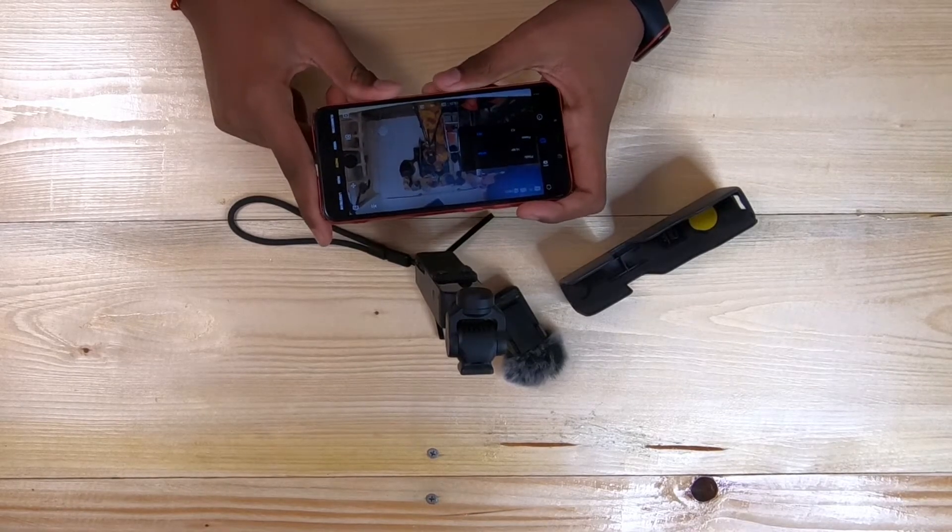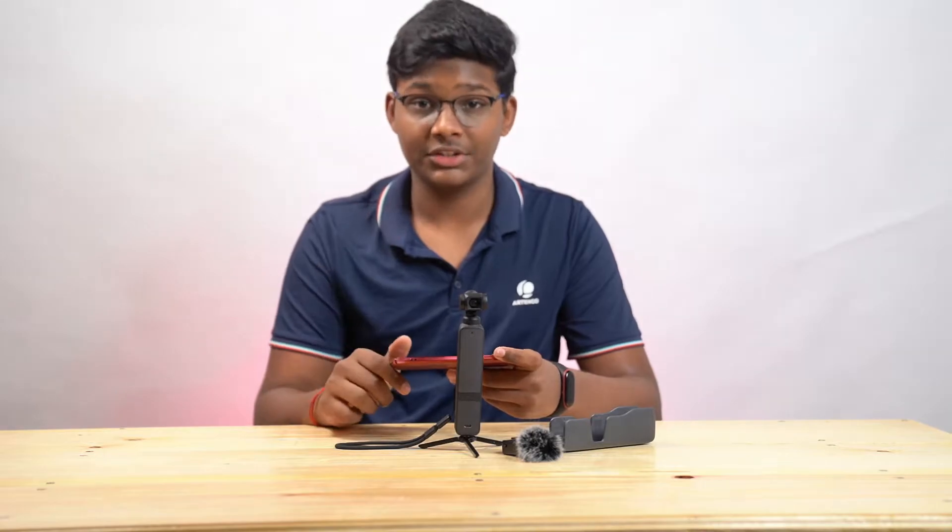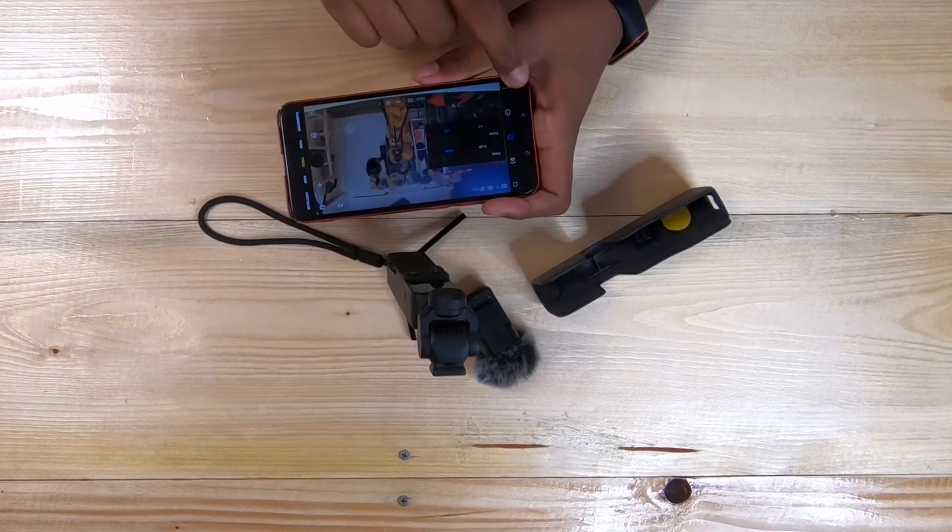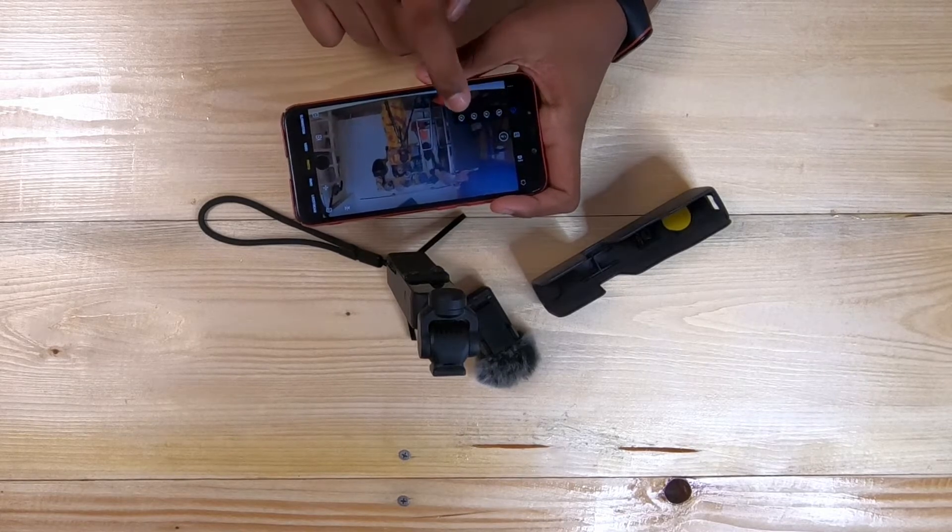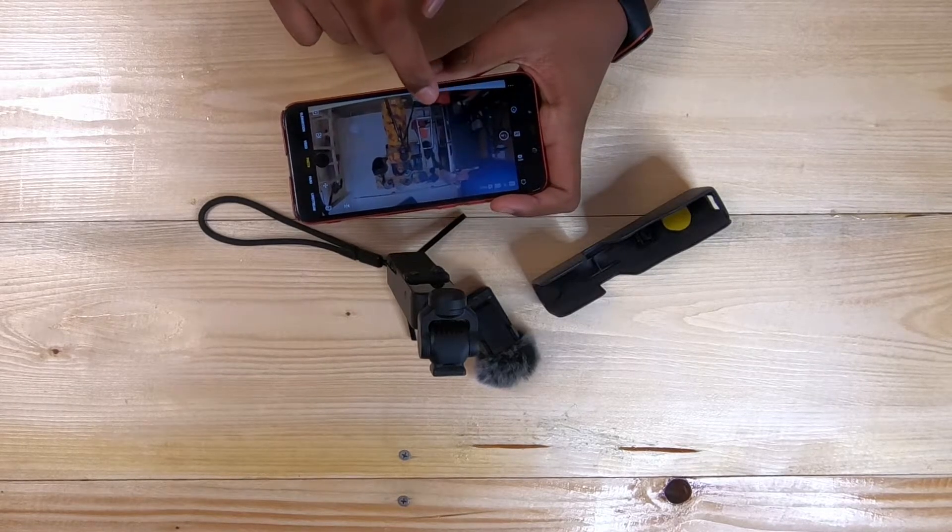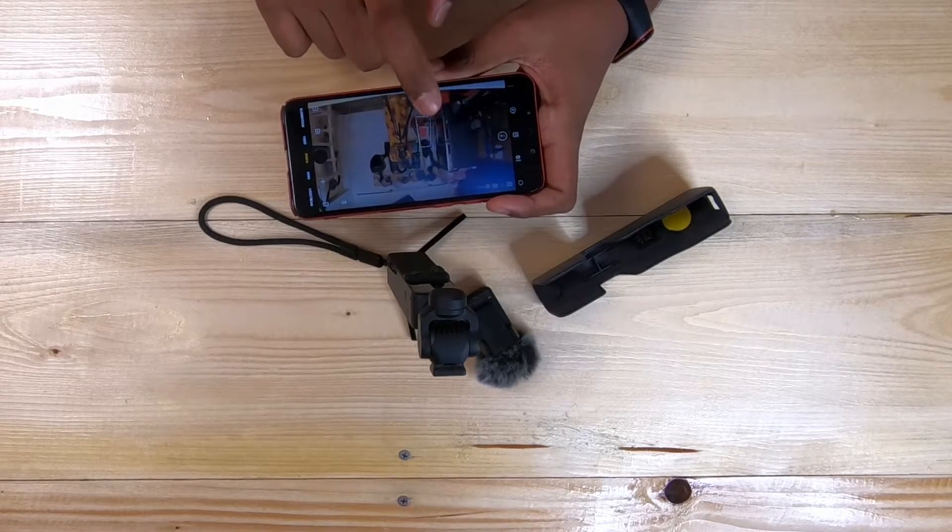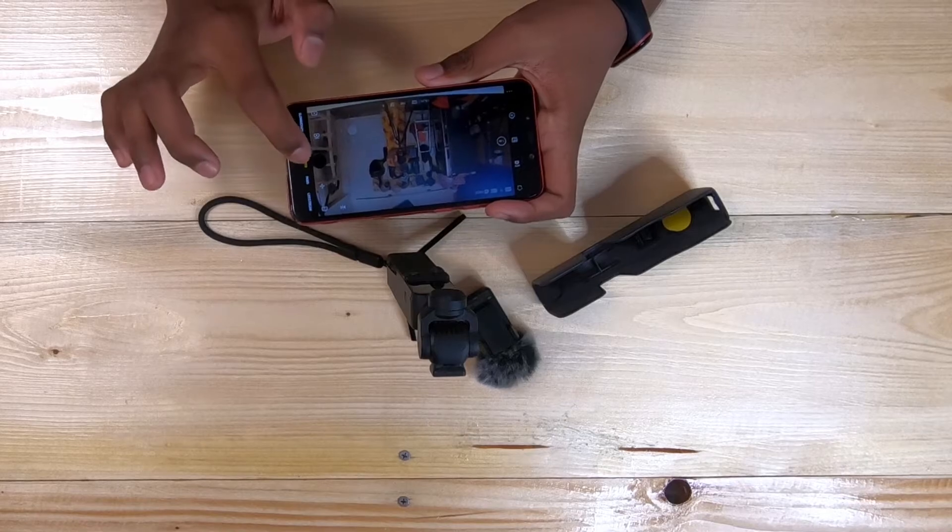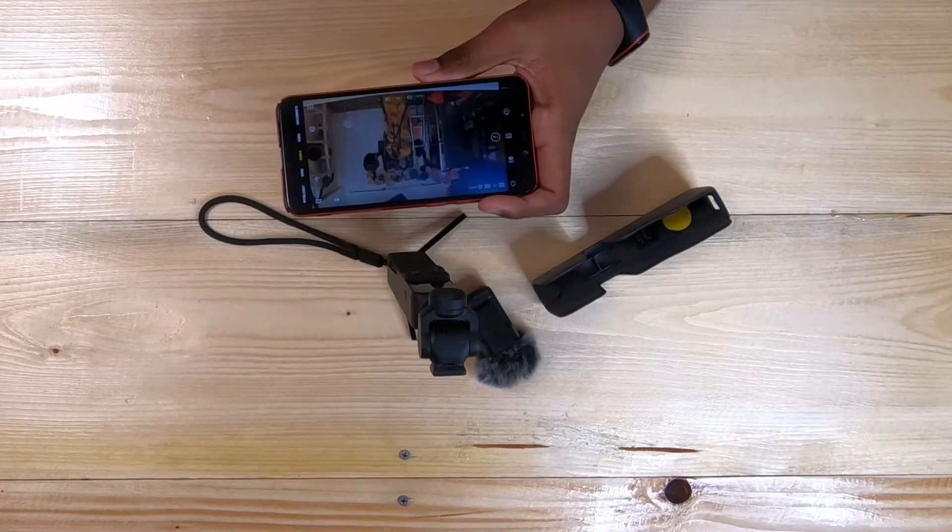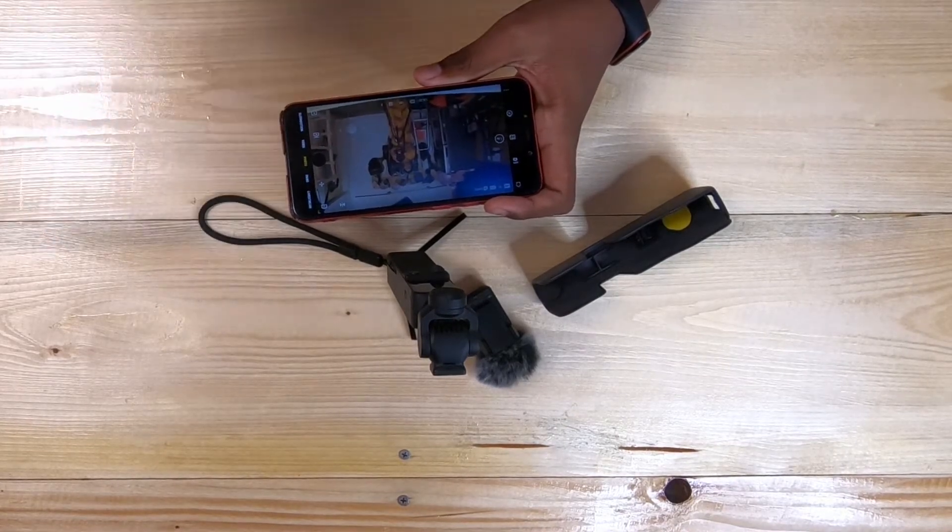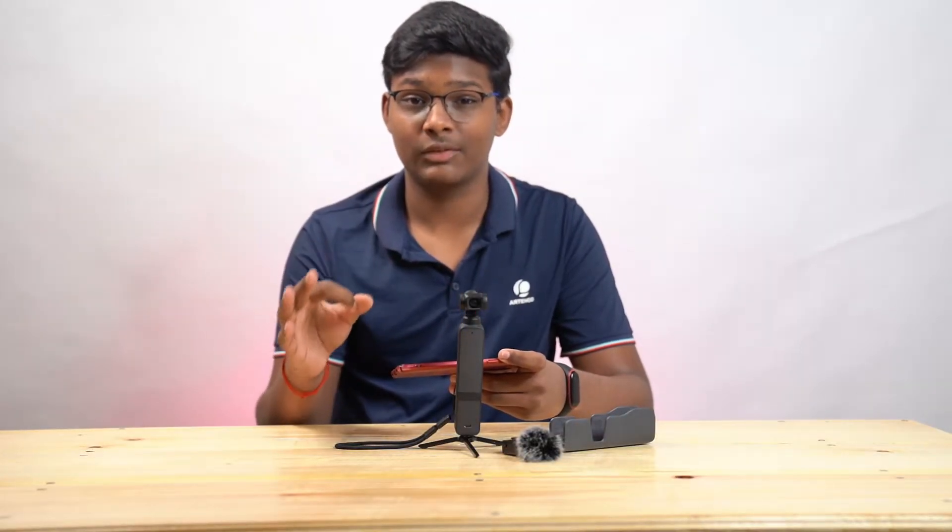In case you want to take a group photo, and you need some time to arrange yourselves. No problem, we got it over here. We have the timer settings over here. So, we change the timings. We have off, and then we have a 3 seconds timer, 5 seconds timer, and 7 seconds timer. So, after you set the timer, you want to take a wide-angle group photo. So, you click the trigger, you have 7 seconds to arrange yourself, and then we have a clean 64 megapixels photo. This thing is very convenient.